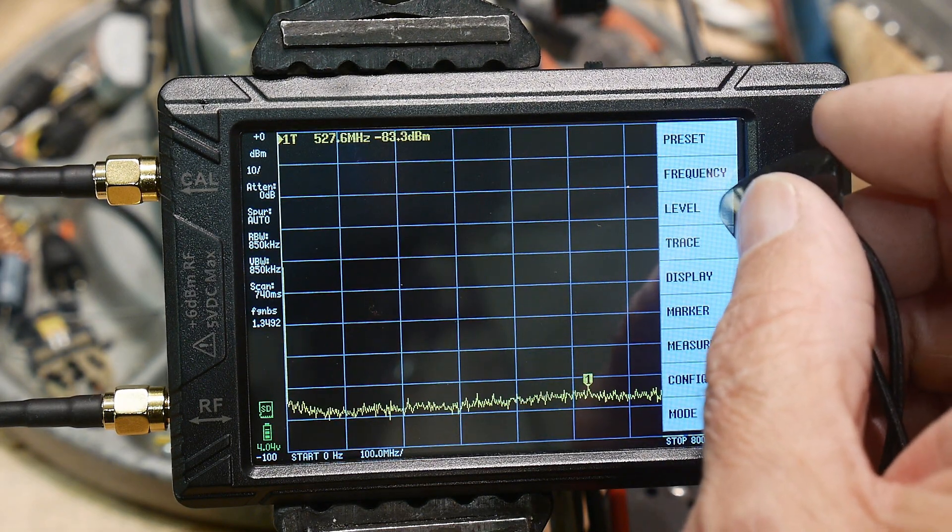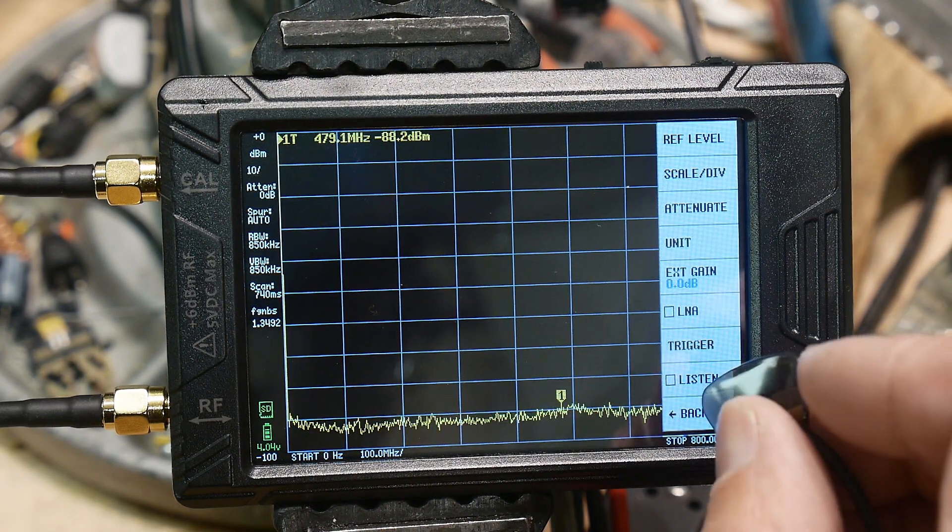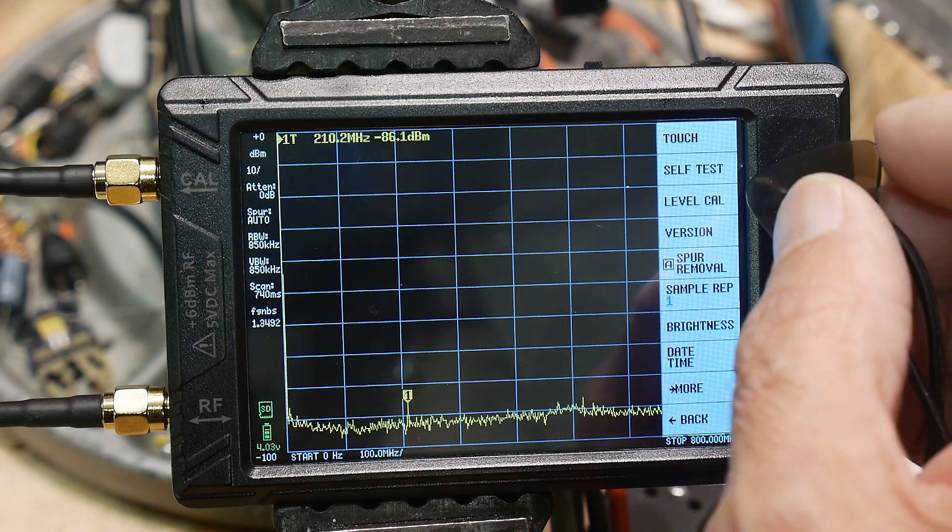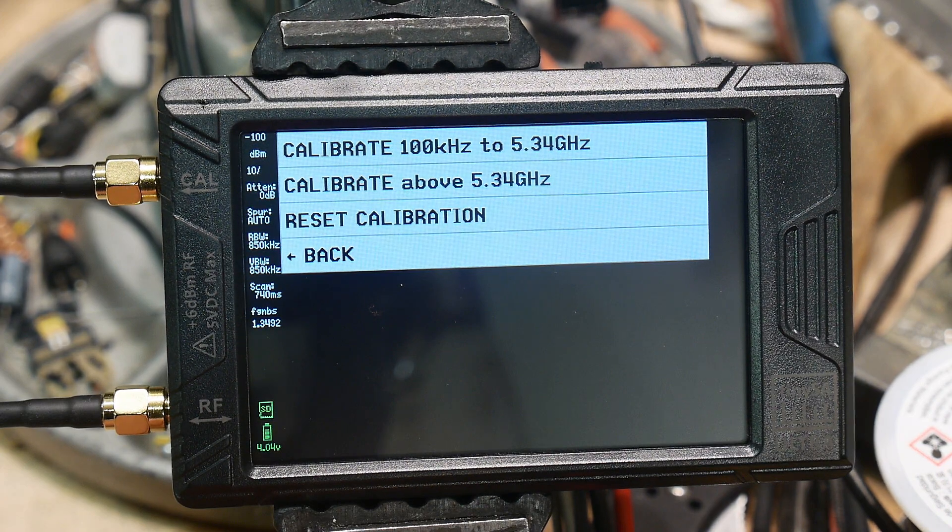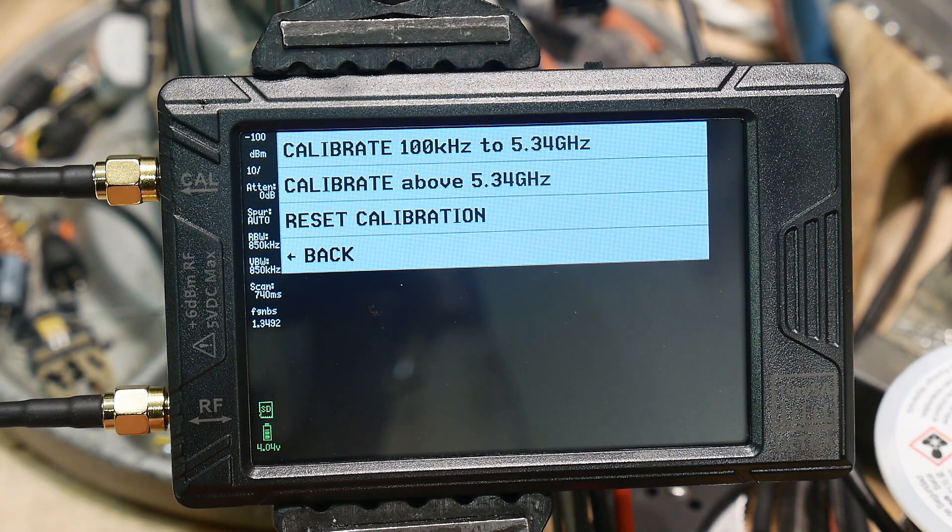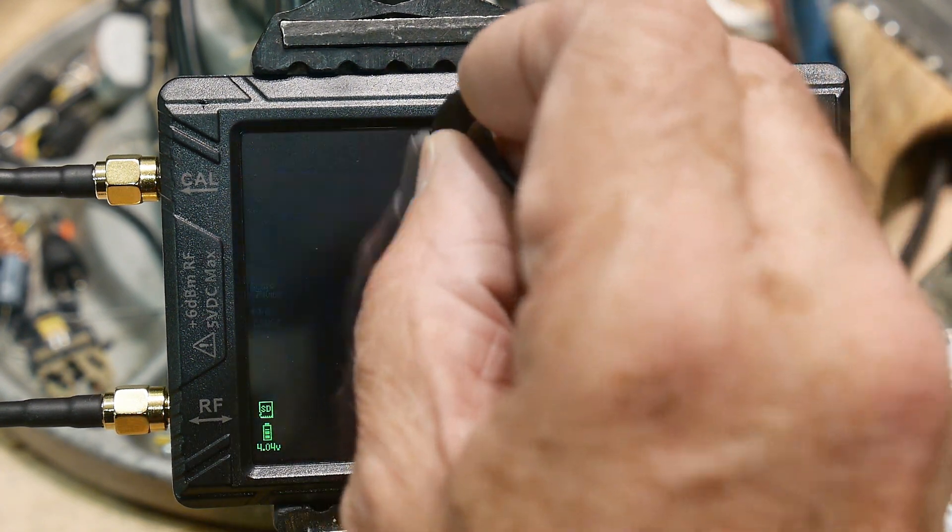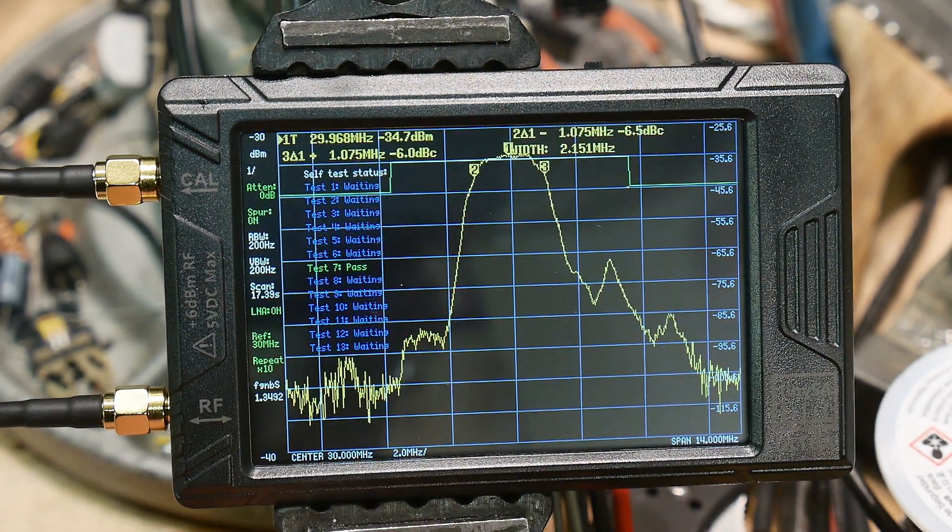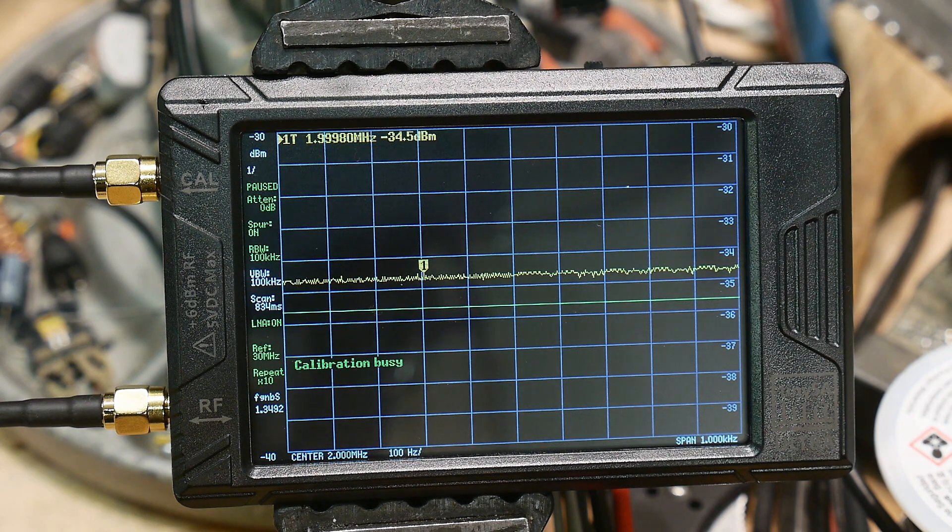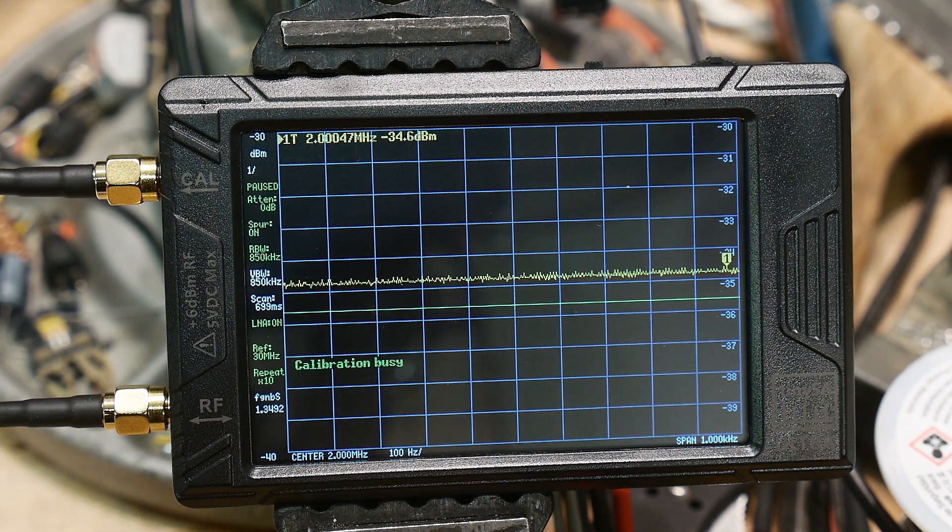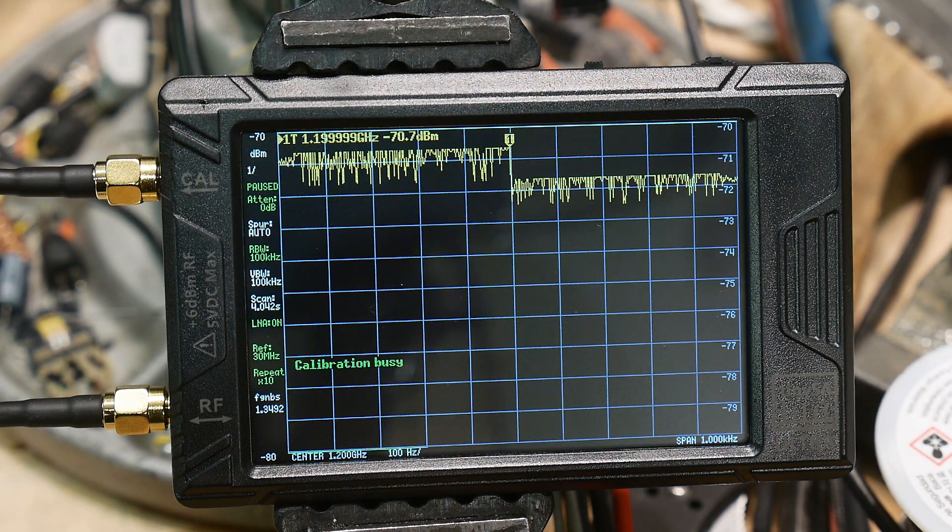Let's do level calibration. We'll do config, level cal. Calibrate 10 kilohertz to 5.3 gigahertz or calibrate above 5.3. I think we'll do the first one.